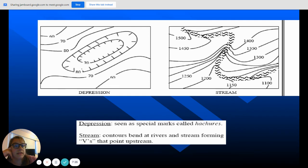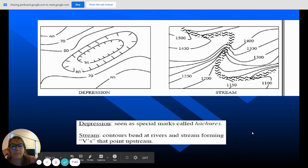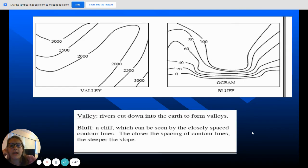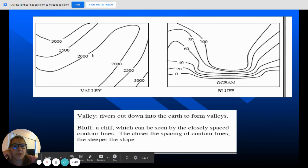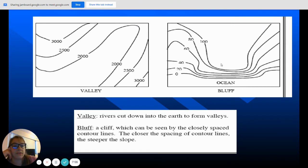So Vs point upstream. Vs point upstream. Valleys are usually wide open, spread out areas. And you're going to have cliffs when the iso lines are closer together. The closer the iso lines are together, the steeper it is. The farther they are away from each other, the more gradual it is.